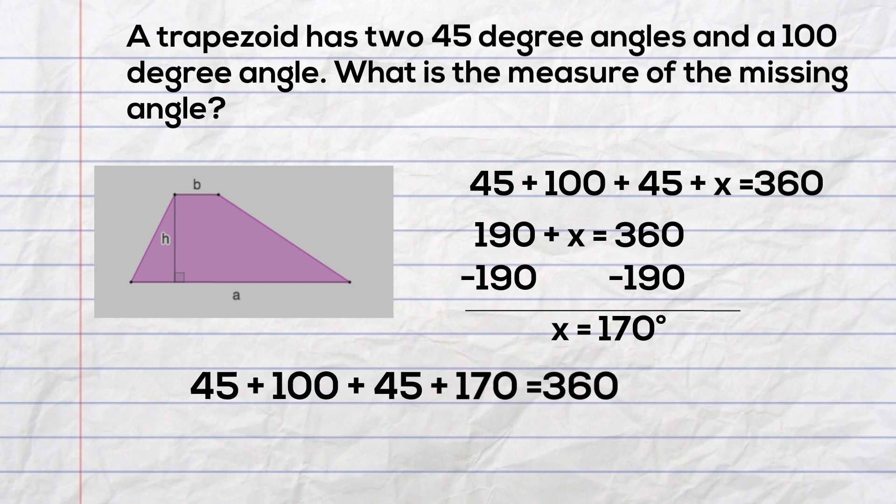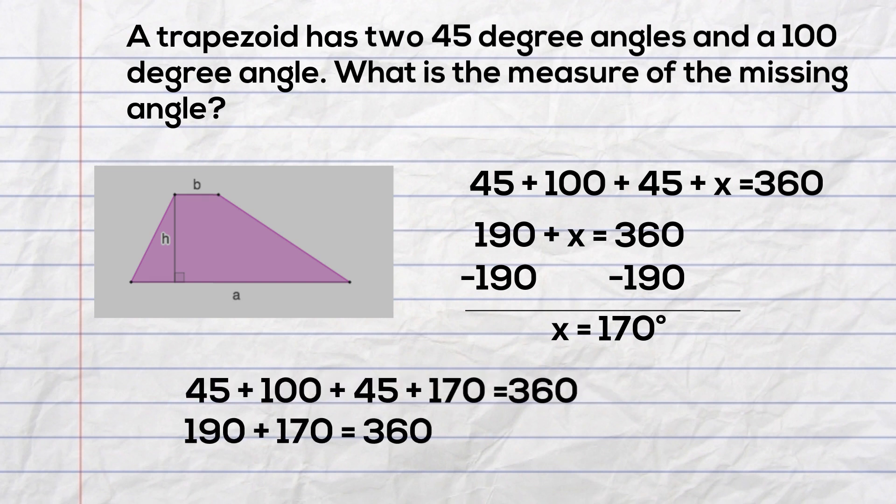Next I'll check my work. When I add the numbers, 45 plus 100 is 145, plus 45 is 190. 190 plus 170 is 360. So the missing angle does equal 170 degrees for this trapezoid.